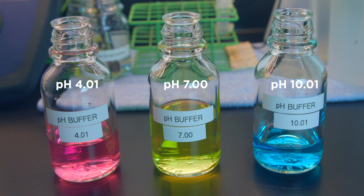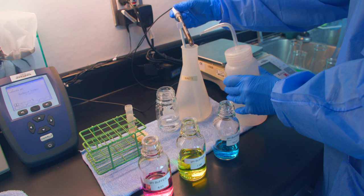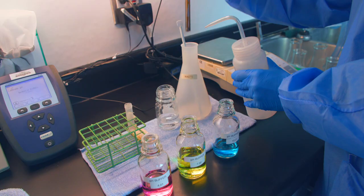Take your probe out of the pH storage solution, rinse with deionized water, and turn on the pH meter. Place the probe into the pH 4.01 buffer and gently swirl to remove any bubbles from the tip of the probe.